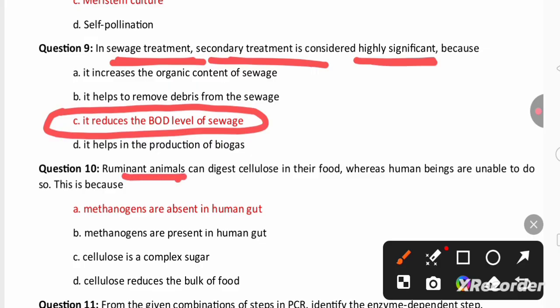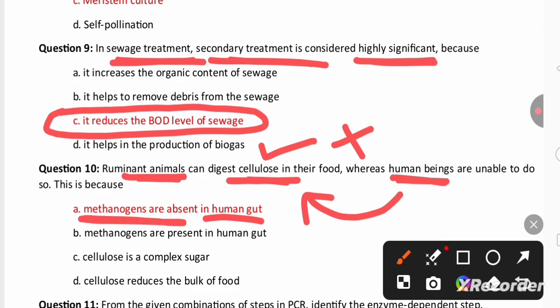Then next question: ruminant animal can digest cellulose present in the grass whereas human beings are unable to digest cellulose. Human beings unable to digest cellulose because in human gut we cannot find methanobacterium or methanogen bacteria. Methanogen bacteria present in the ruminant animal can help in digesting cellulose and producing methane gas which is used as biogas.